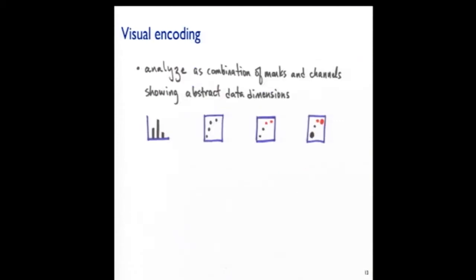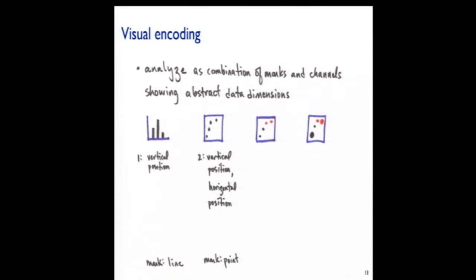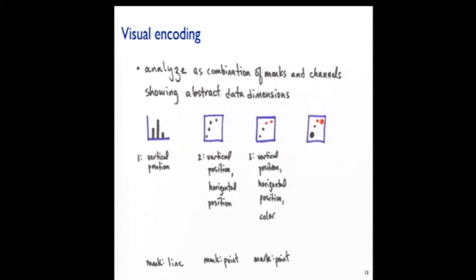Let's go back and analyze these in terms of marks and channels. A simple bar chart: the mark is a line and the channel is vertical spatial position, encoding one abstract data dimension. A scatter plot: we're still using spatial position but now horizontal and vertical, and our mark is a point. We can add color as an additional visual channel — now we're encoding three abstract dimensions. With a color-and-size-coded scatter plot, we've got four data dimensions. We've added size as a visual encoding channel, and we're still using point marks.